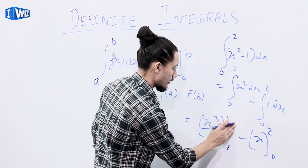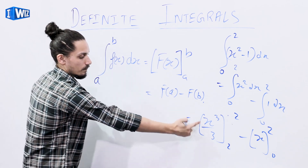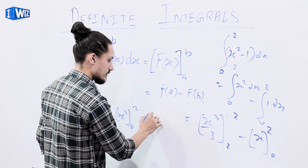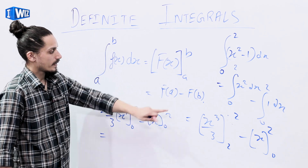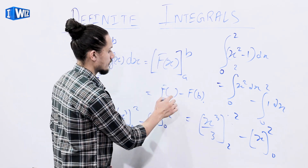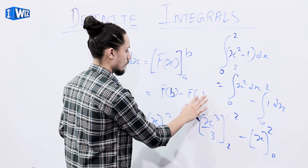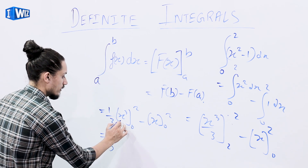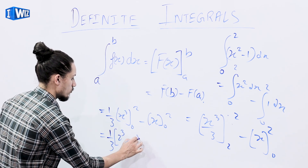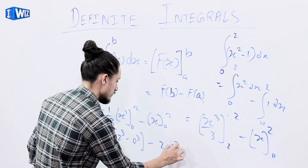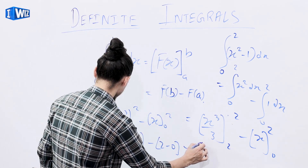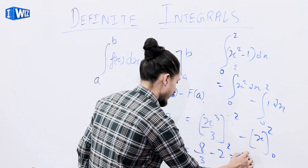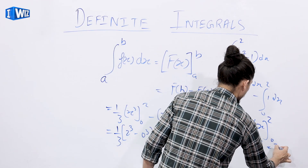Applying the limits — upper limit is 2, lower limit is 0 — we get 1/3 times (2 cubed minus 0 cubed) minus (2 minus 0), which equals 8/3 minus 2, which equals (8 minus 6)/3, which equals 2/3.